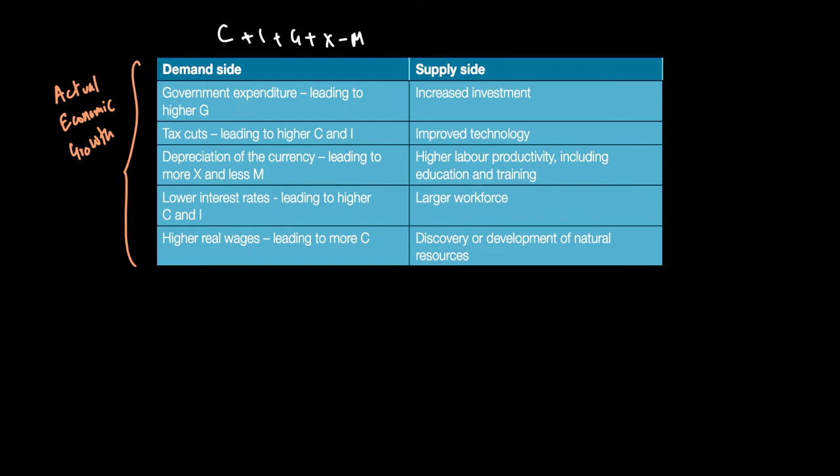So government expenditure can go up that can lead to a rise in G. Or similarly, if there is a reduction in taxes, this can lead to higher consumption or higher investment because disposable income will now go up because direct taxes are going down.